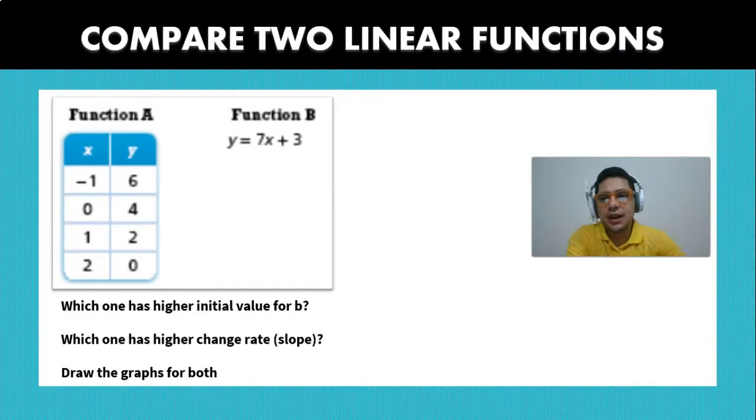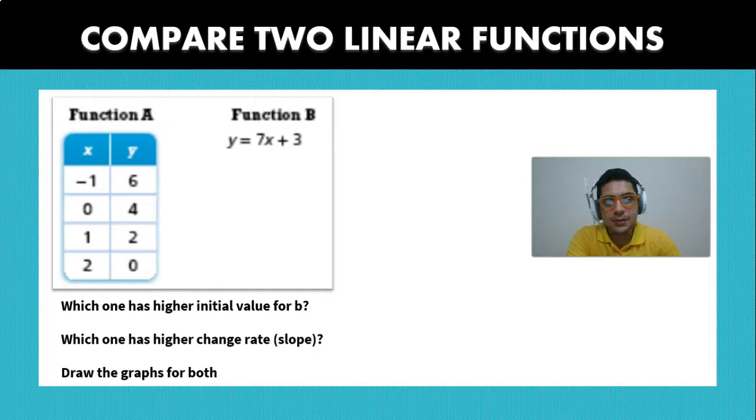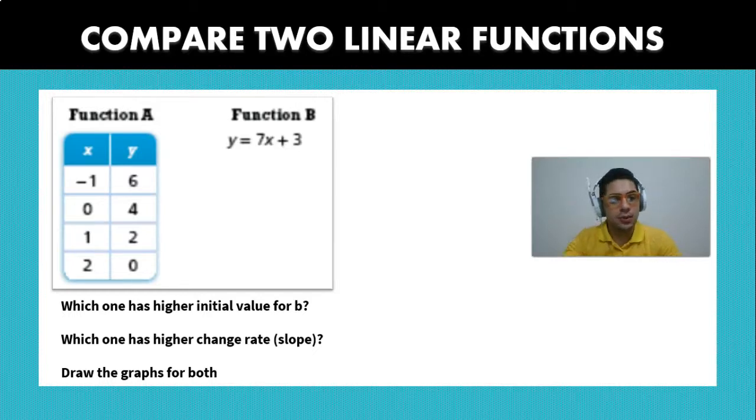So in this case we have function A which is a table and function B which is going to be an equation. And they're asking us three things: Which one has the higher initial value for b? Which one has the higher rate or slope? And they're asking us to draw the graphs for both of them.